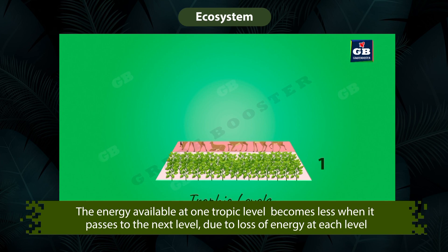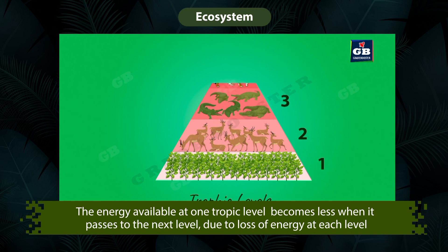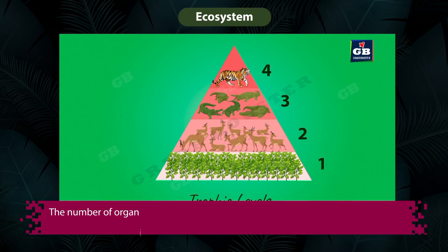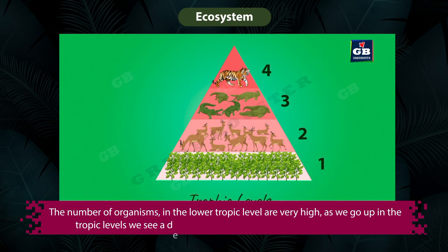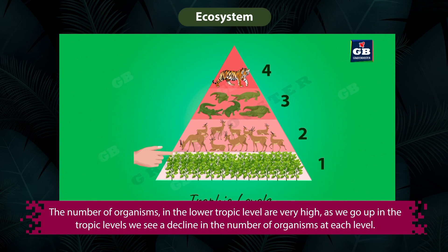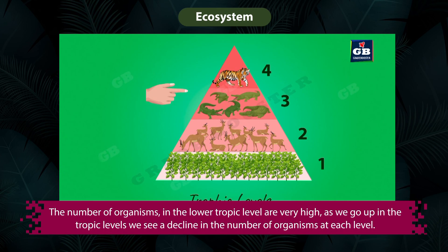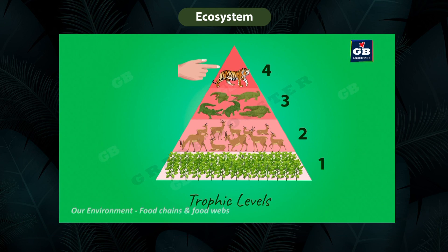The energy available at one trophic level becomes less when it passes to the next level due to energy loss at each level. Also, the number of organisms at the lower trophic levels is very high; as we go up through the trophic levels, we see a decline in the number of organisms at each level.